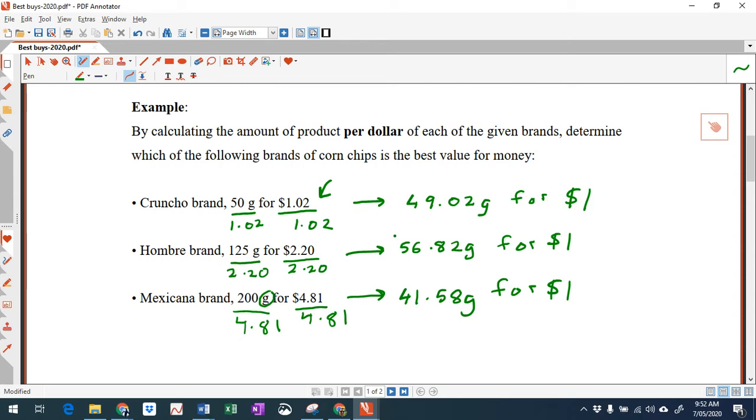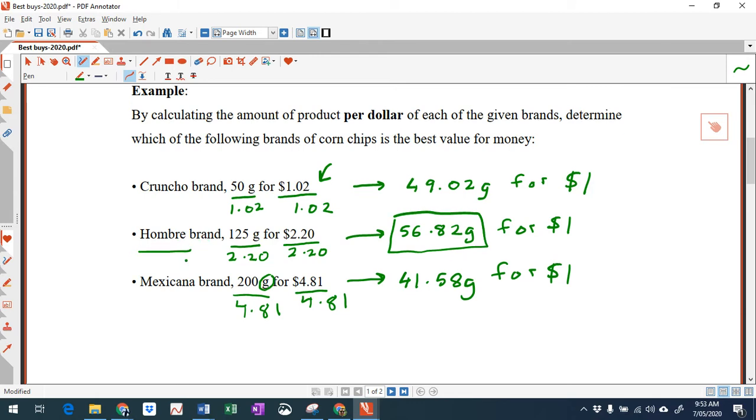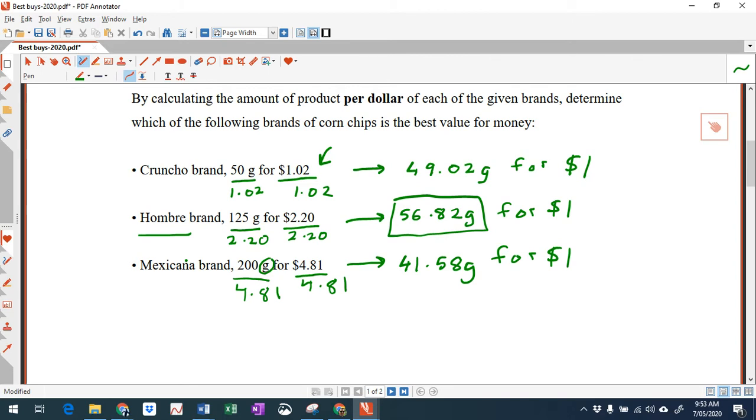So clearly, I'm getting more grams of corn chips for $1 for the Hombro brand. So what I would say is Hombro is the best buy.